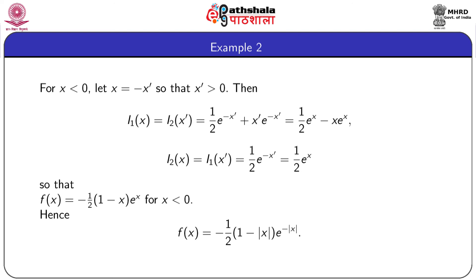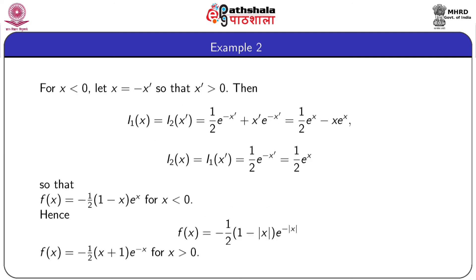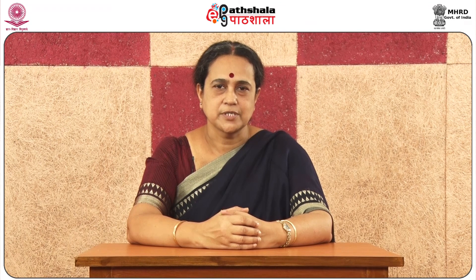Combining these two results for x positive and x negative, the solution of the given differential equation is f(x) = -½·(1 - |x|)·e^{-|x|}. This is the solution of the given differential equation. In this module, we have seen how Fourier transform can be applied to solve linear ordinary differential equations, and with this we conclude this module.